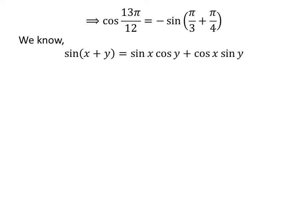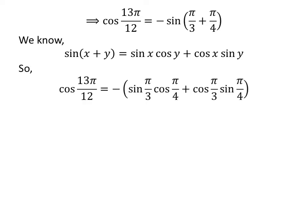We know sin of x plus y is equal to sine of x times cosine of y plus cosine of x times sine of y. Application of the above identity gives us cosine of 13 times pi upon 12 is equal to minus of sine of pi upon 3 times cosine of pi upon 4 plus cosine of pi upon 3 times sine of pi upon 4.